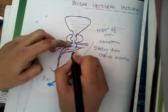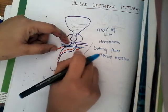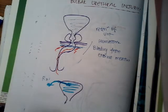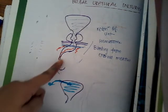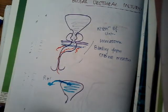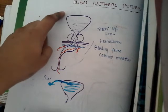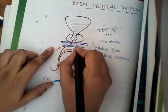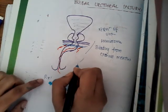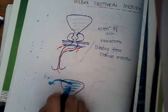If passing the catheter fails, give general anesthesia, place the patient in lithotomy position, perform percutaneous suprapubic cystotomy, and make a perineal incision to approach the bulbar urethra. Suture the injured part of the bulbar urethra, insert a Foley's catheter, and leave it in place for drainage.